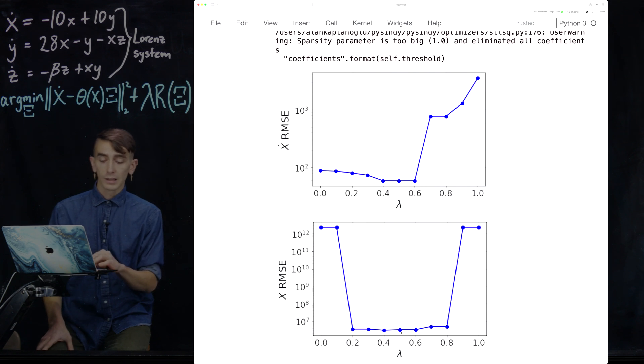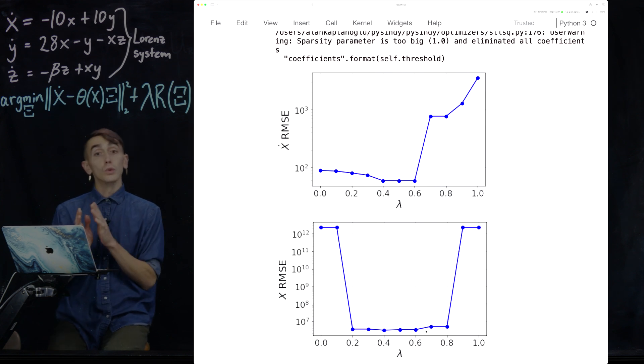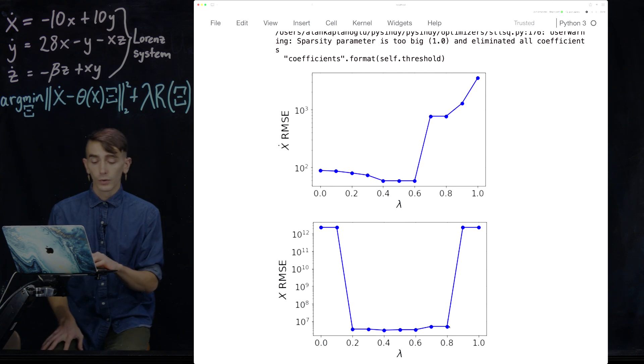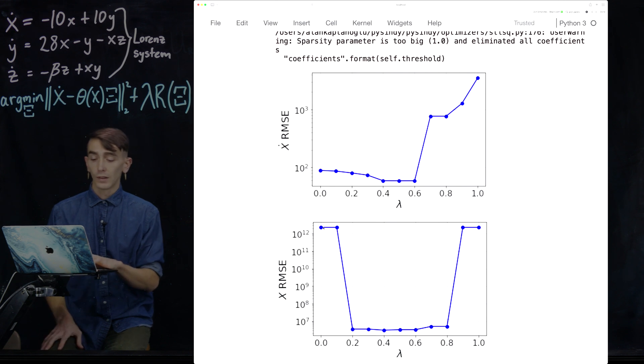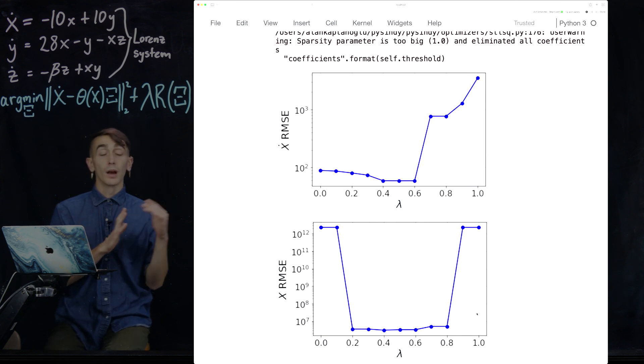So some sparsity basically chops off those noise-added terms. And then you get these nice models down here that actually are fitting the new trajectory quite well. However, again, if you turn up the sparsity promotion too much, so from 0.8 to 0.9, suddenly you're chopping off really important terms again. And once again, the models go unbounded in growth. And so you sort of get this sort of valley here where you want some sparsity promotion but not too little or too much.